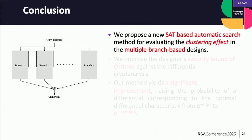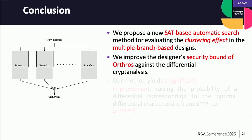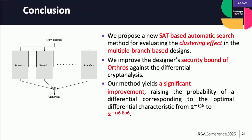The table shows the result of our method in comparison with the previous distinguishing attack on Ultros. We propose a new search method for evaluating the clustering effect in multiple branch-based designs. We improve the designer's security bound of Ultros against differential cryptanalysis. Our method is a significant improvement, raising the probability of a differential corresponding to the optimal differential characteristic.